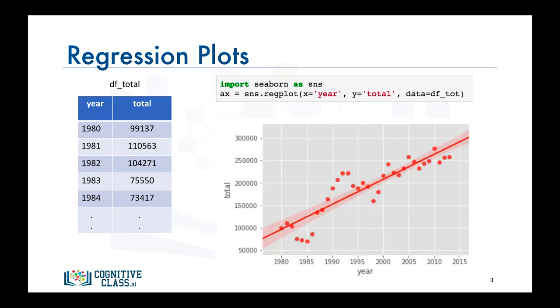And the output of this one line of code is a scatter plot with a regression line, and not just that, but also a 95% confidence interval. Isn't that really amazing?